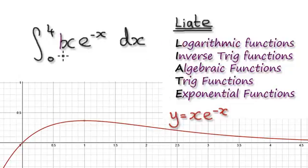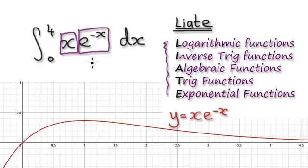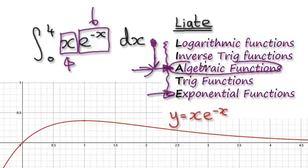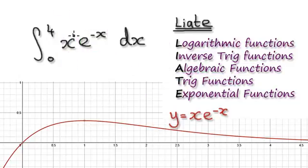Remember this list — we are working our way down it. We've got this times this here. This is an algebraic function, and this here is an exponential function. Working our way down the list, whichever comes first would be our u substitution — so this one comes first and should be made our u.